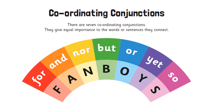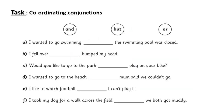Now we're going to look at some different examples and usage of those conjunctions. We'll look through these sentences and put in the correct conjunction. 'I wanted to go swimming — the swimming pool was closed.' The answer is 'but': I wanted to go swimming but the swimming pool was closed. 'I fell over — bumped my head.' The answer is 'and': I fell over and bumped my head.